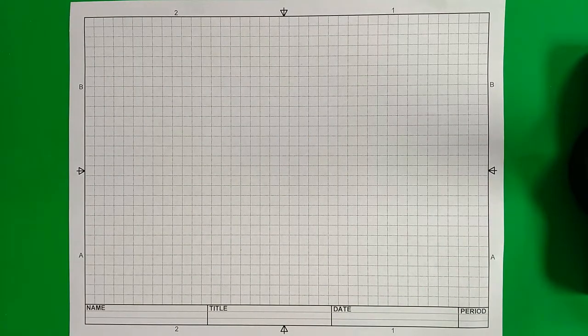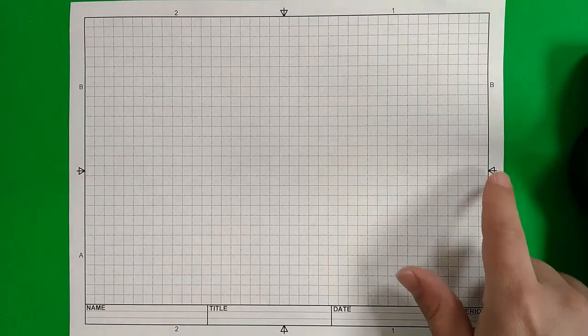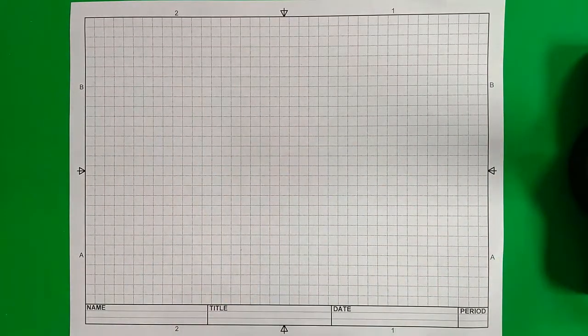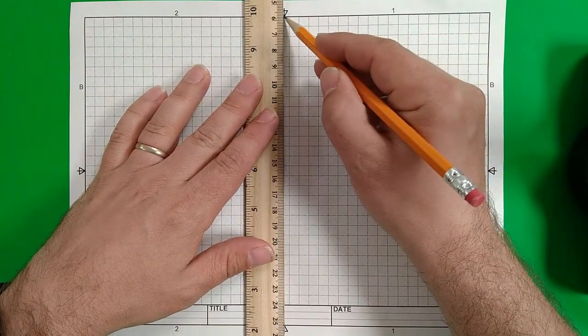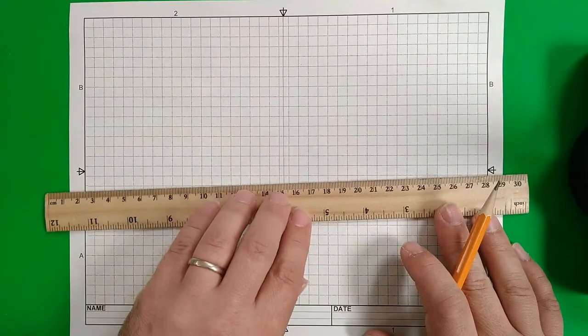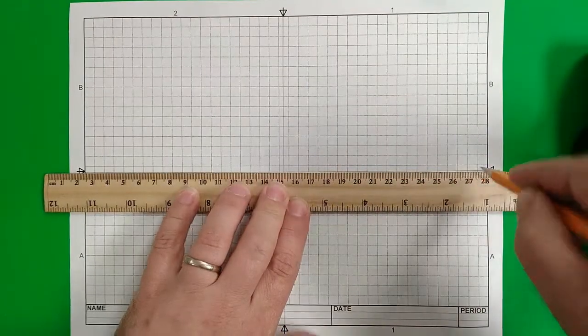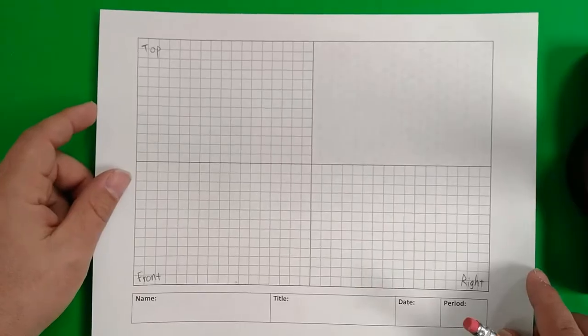Now, any normal grid paper can work. However, when doing these multi-view sketches, it helps to have quadrants identified on here. To do that, I can take these arrows that are on this, or if I just take a normal grid paper that doesn't have all these extra markings, I just want to find the center. And when I find the center, I'm just going to take a pencil and draw down the center with my straight edge, and the same thing across the center going this way in order to create quadrants that I can work in.